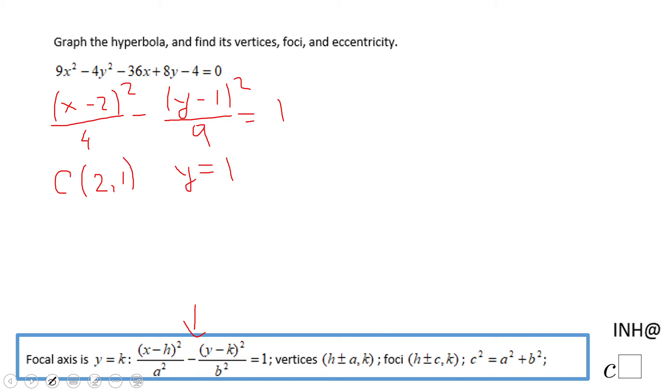For finding the first vertex, we're going to have to move 2 units left, because a² is 4, so from (2, 1) I'm going to get the vertex (0, 1). The second vertex will be moving 2 units right from (2, 1), so that will be (4, 1). So we finish with the vertices.